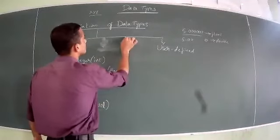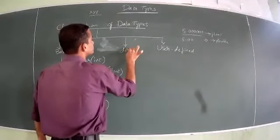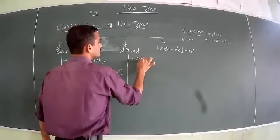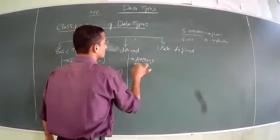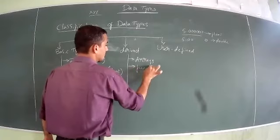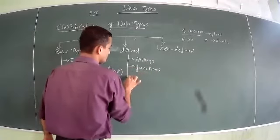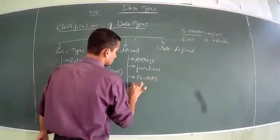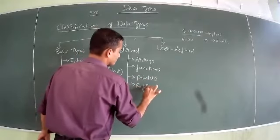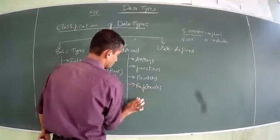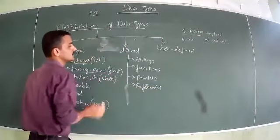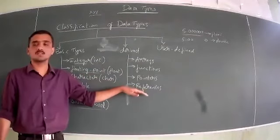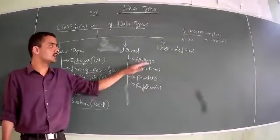Coming to the derived types, we have these categories: Array, Functions, and Pointer. In this particular chapter we will not cover these, because we have separate chapters for Array, Functions, and Pointer.